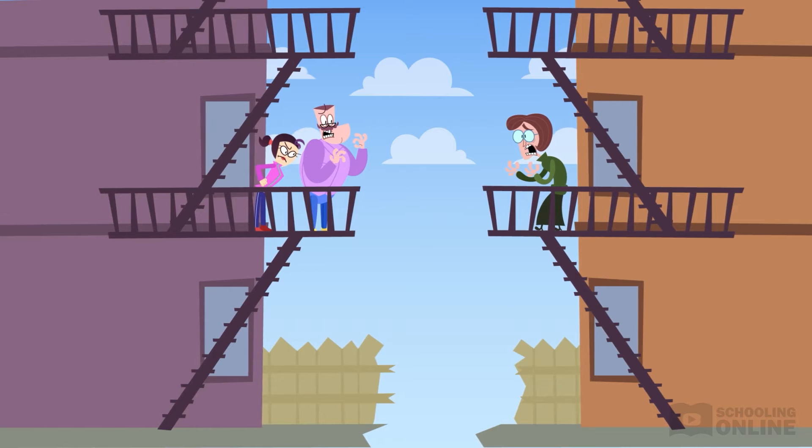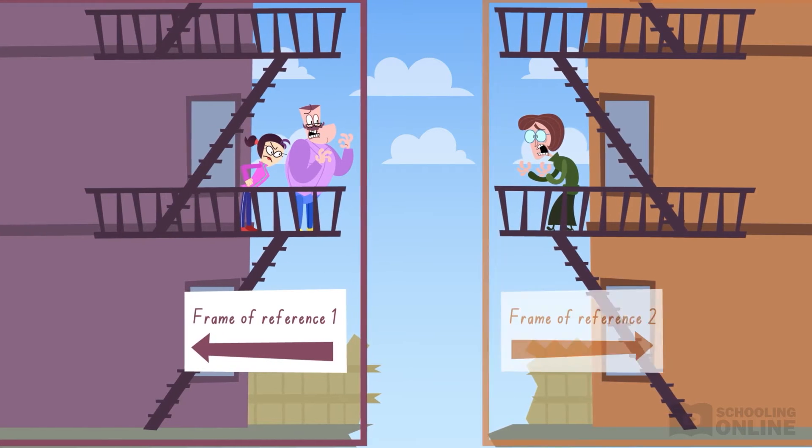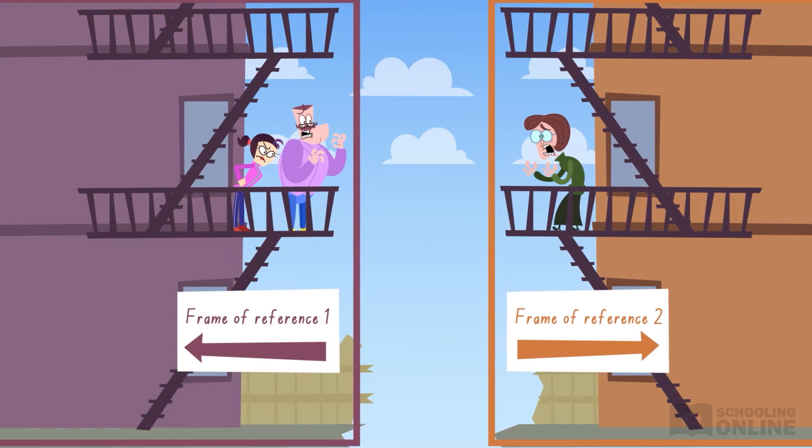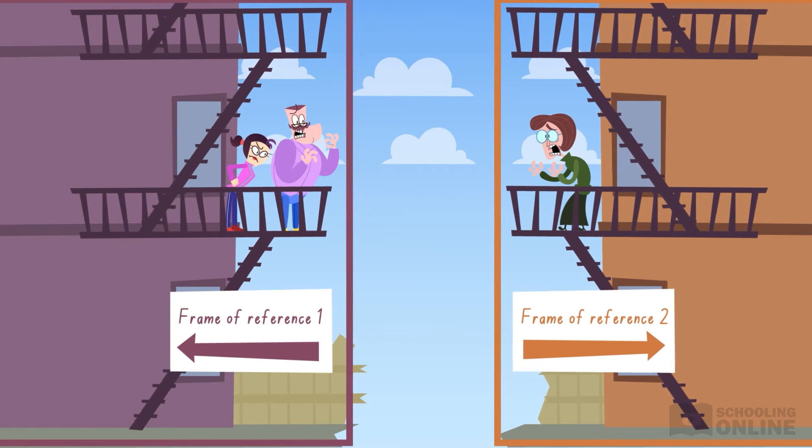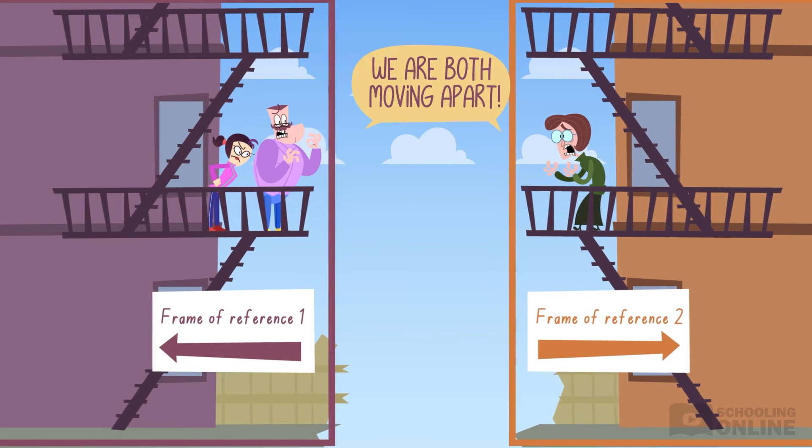In our earlier example, Lotus and Mark had a different viewpoint to Jodie. If they account for the relative motion between their frames of reference, they would come to the same conclusion that they are moving apart.